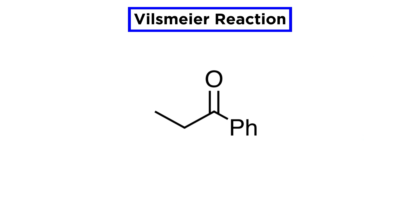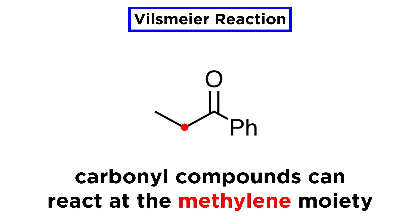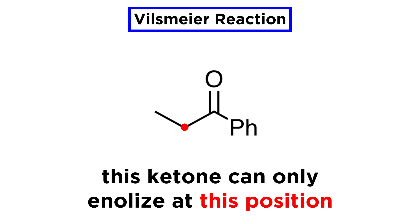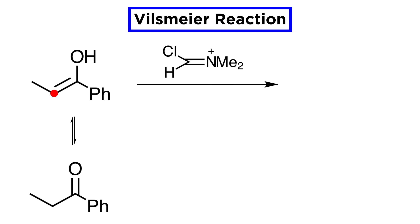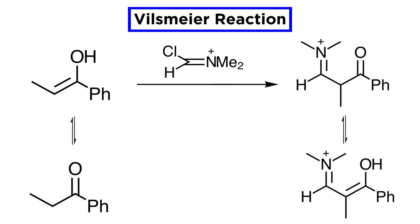An interesting extension applies to carbonyl compounds, which can react at the active methylene moieties via their enol forms. Consider the following ketone, which can only enolize in one direction. If the ketone can yield two different enols, usually the more substituted one forms, but in this case we have just one option. Attack of the reagent at the beta carbon of the enol yields the iminium ion, which is in equilibrium with the conjugated enol.